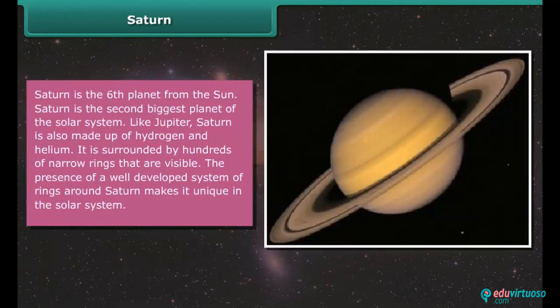Saturn. Saturn is the sixth planet from the sun. Saturn is the second biggest planet of the solar system. Like Jupiter, Saturn is also made up of hydrogen and helium. It is surrounded by hundreds of narrow rings that are visible. The presence of a well-developed system of rings around Saturn makes it unique in the solar system.